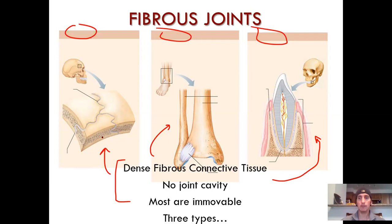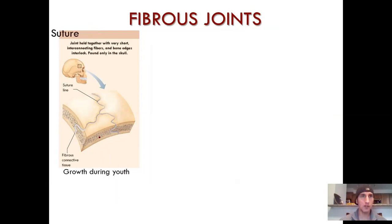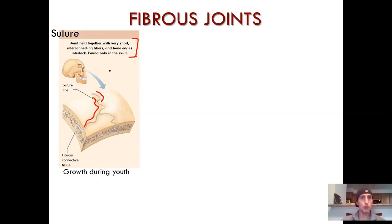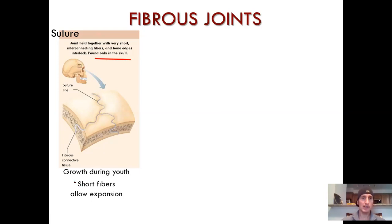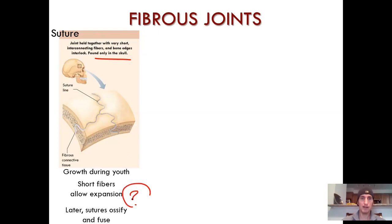Three types of fibrous joints. Number one: a suture. These grow during youth — when you're a baby they're a little more separate with some flexibility. We'll look at the fontanelles on an infant skull in the lab. Short, interconnecting dense fibers found only in the skull. Those short fibers initially allow for expansion, and later they ossify. Why would you want that function? Think about it.